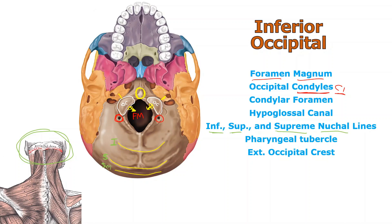The external occipital crest runs from the foramen magnum up to the external occipital protuberance. The word 'tuber' means potato, so a protuberance is just a lump that looks like a potato bulging out of the bone.